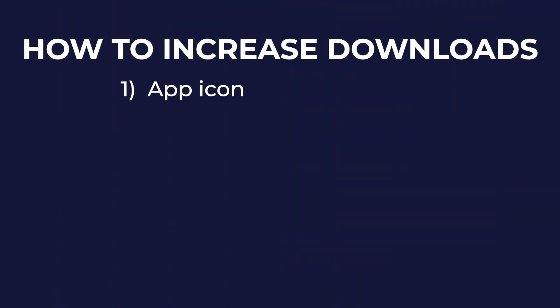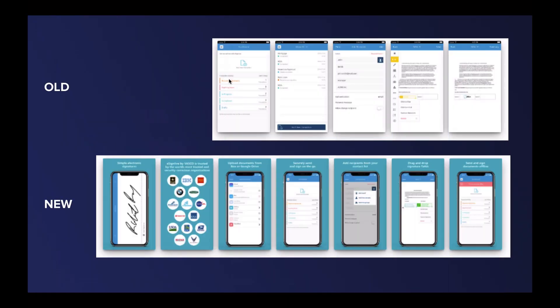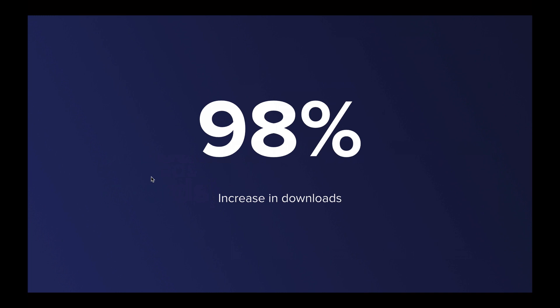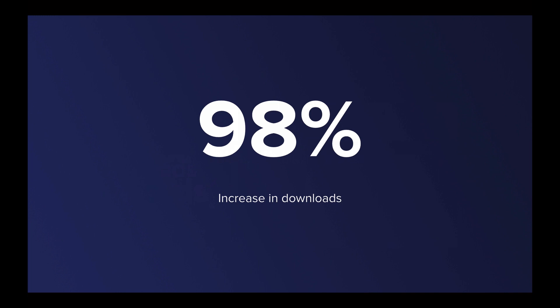The next thing you want to optimize is your app store screenshots. Here's what we did for one of our clients. The old screenshots were pretty dated and didn't really have any tags or unique selling points of the app. You really want to highlight those features in your screenshots — they're just literal screens of the app. You want to make them look like banners. After making that change without touching keywords, we saw a 98% increase in downloads — that's double the downloads just by changing the screenshots.